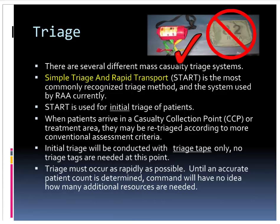START is used for the initial triage of patients only. When patients arrive at a casualty collection point or treatment area, they can be re-triaged according to more conventional assessment methods. The only thing we're going to use to conduct this triage is triage tape versus tags or other specialty materials. We're strictly going to use this triage survey tape — down, dirty, quick, easily recognizable — and then move along to triage and treat other patients.